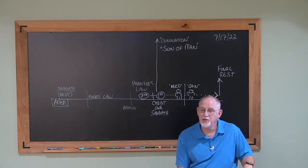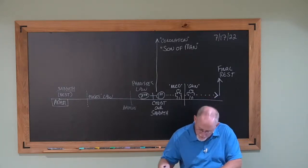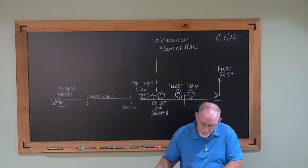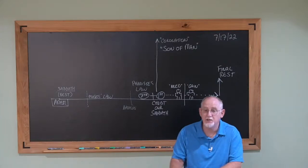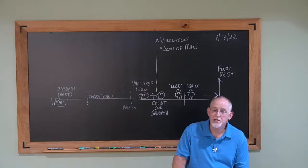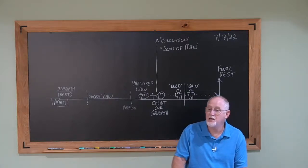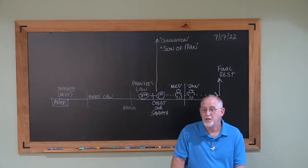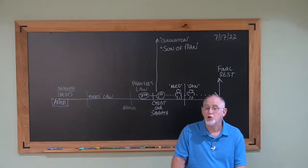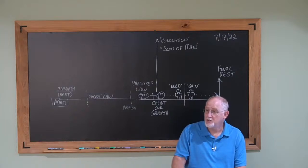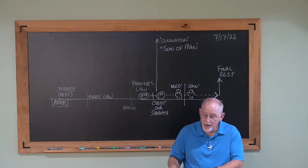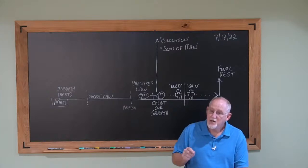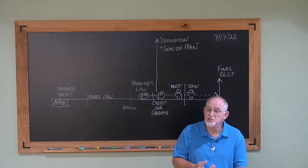I got a quote I wanted to read. Men never do so much evil so completely and cheerfully as when they do it from a religious conviction. Isn't that the truth? Some of the most heinous crimes that have ever been committed are committed from some kind of religious conviction. Why did Hitler kill all the Jews? Christ killers he called them. That's how he justified what he wanted to do. He said he was retaliating for Christ.